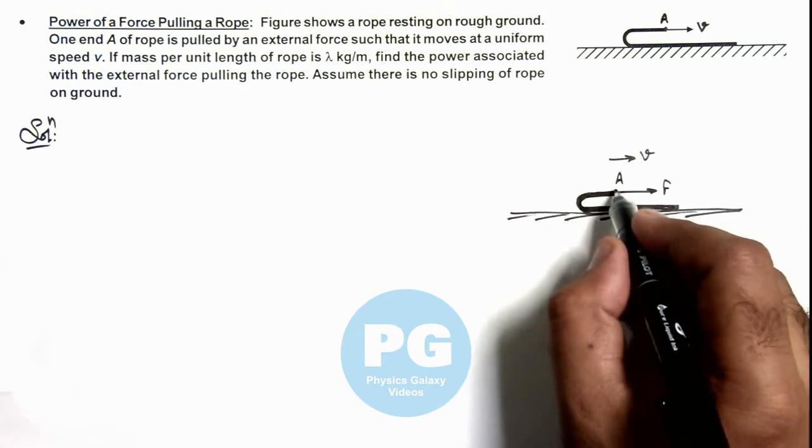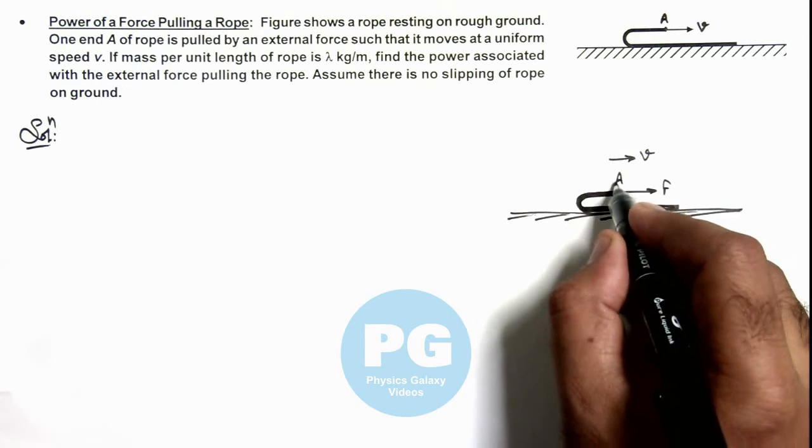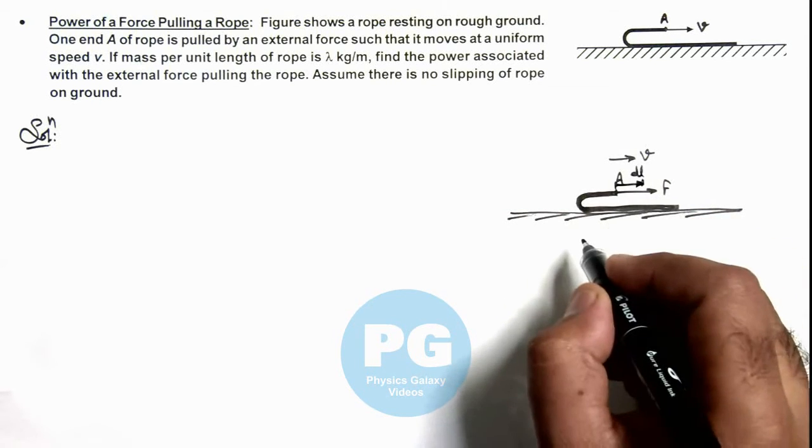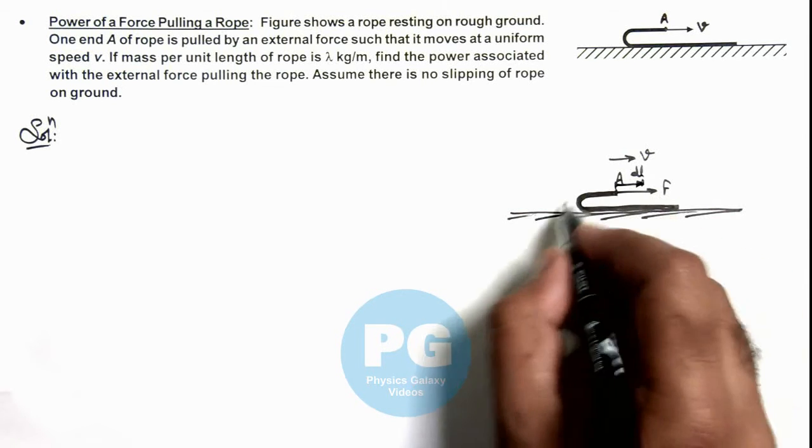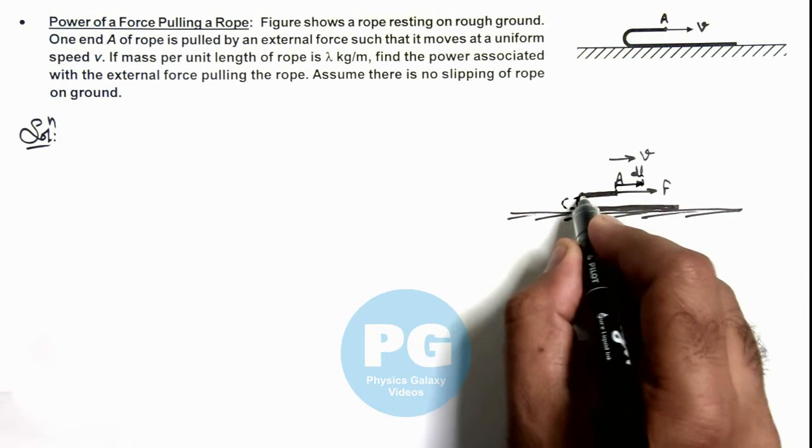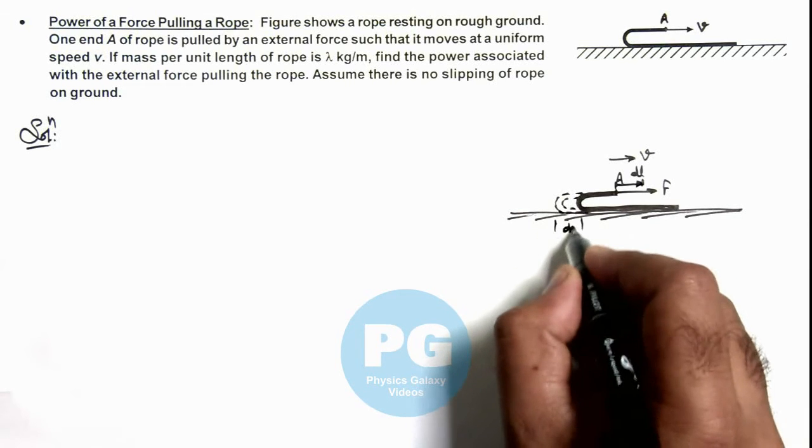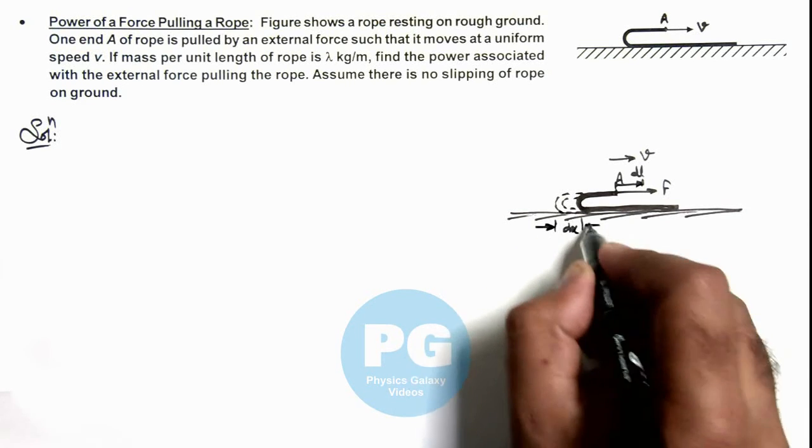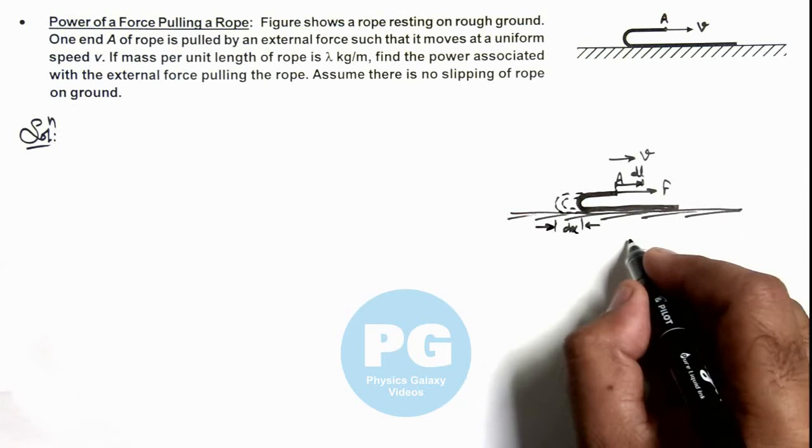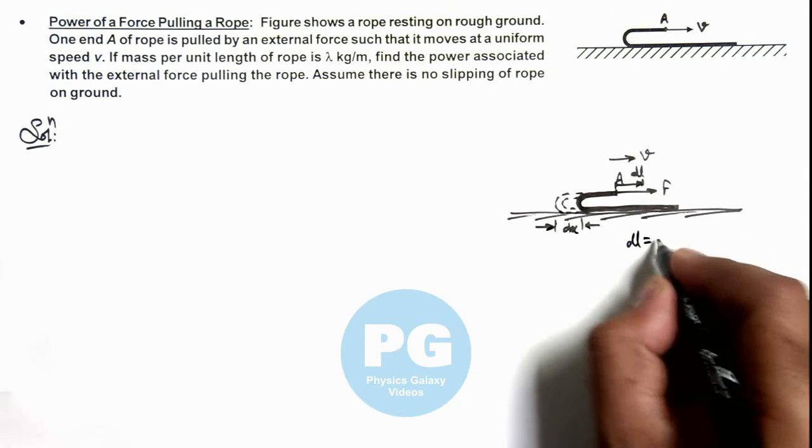Say this end A travels by a distance dl in time dt. Then due to this length dl, we can see if earlier this length of rope was on the ground and this distance is dx, then here we can write the value of dl is equal to 2dx.